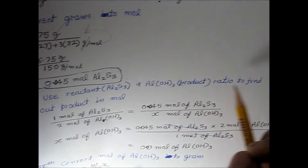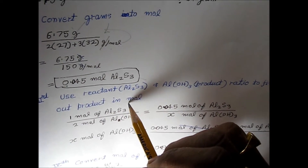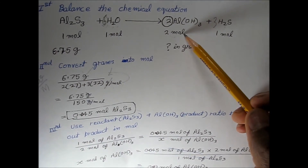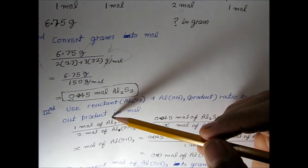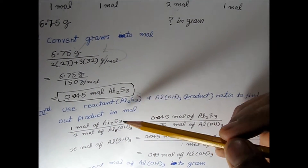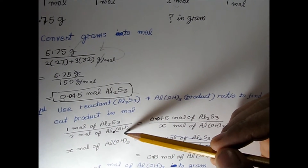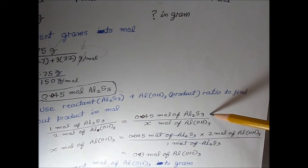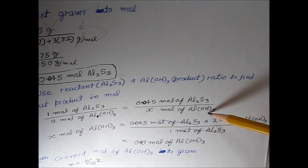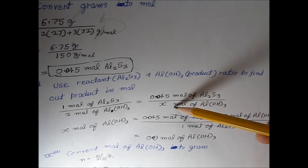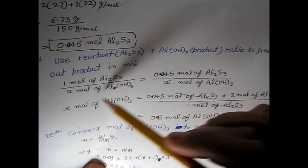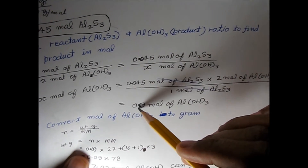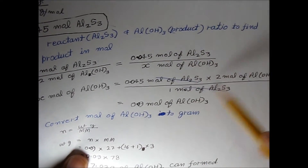Using the mole ratio from the balanced equation: 1 mole of Al₂S₃ produces 2 moles of Al(OH)₃. So if we are using 0.045 moles of aluminum sulfide, we multiply by 2 to get the moles of aluminum hydroxide produced, which is 0.09 moles of aluminum hydroxide.